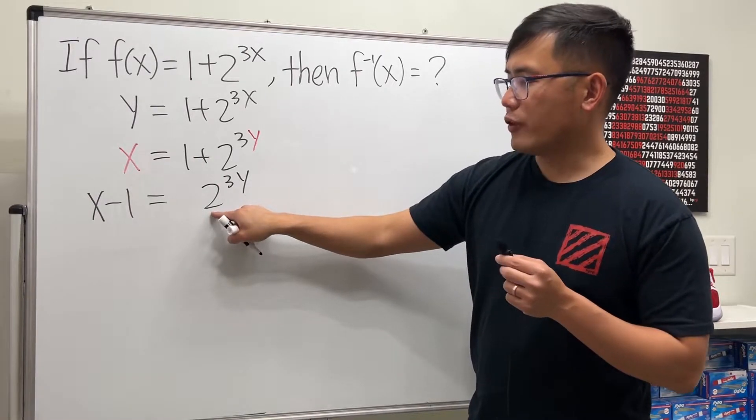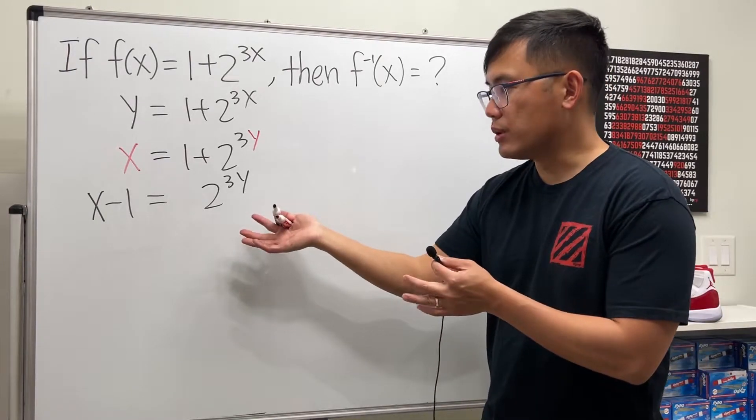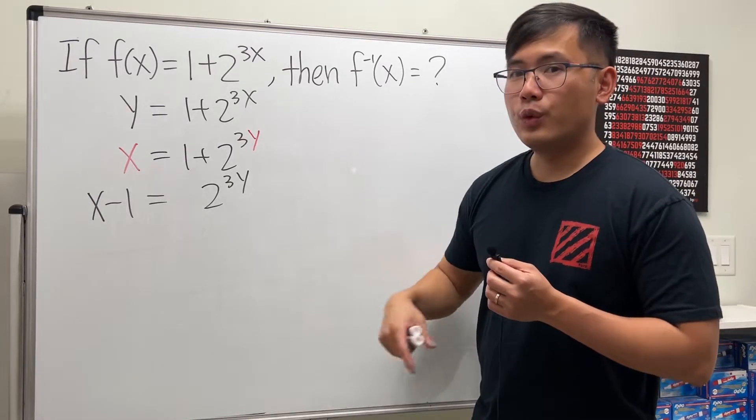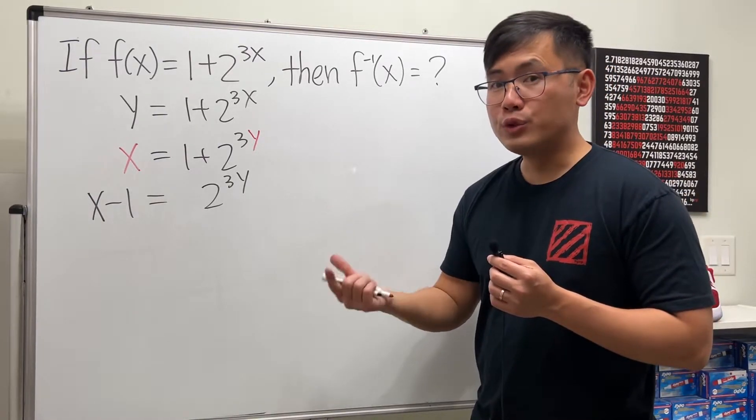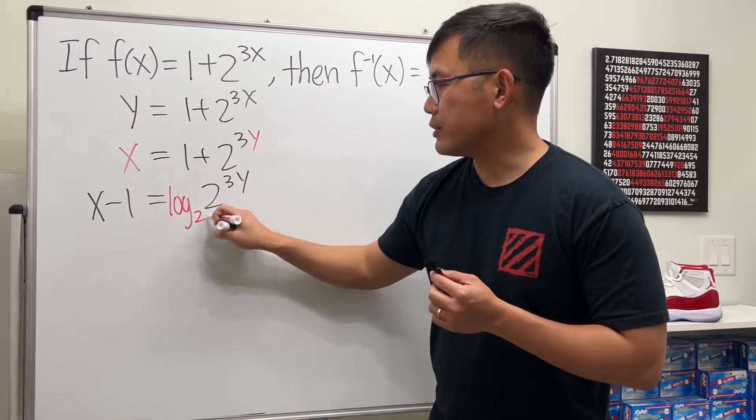Now we will have to get rid of this base 2 because the y is in the exponent and that will be an exponential situation. So what do we have to do if y is in the exponent? We will have to do the inverse of that which is the logarithm. So let's go ahead and take log base 2.